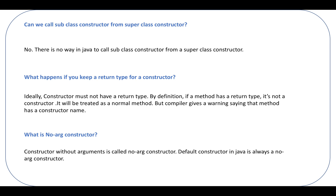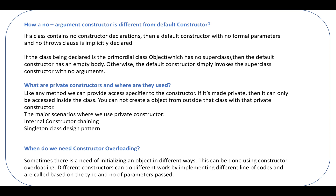What is a no-argument constructor? A constructor without any argument is called a no-argument constructor. The default constructor in Java is always a no-argument constructor. Default constructor means the one provided by Java itself — if you don't write one, Java will provide you a default constructor. How is a no-argument constructor different from a default constructor? If a class contains no constructor declaration, a default constructor with no formal parameters and no throws clause will be implicitly declared. If the class has no superclass, the default constructor has an empty body; otherwise it simply invokes the superclass constructor with no argument.